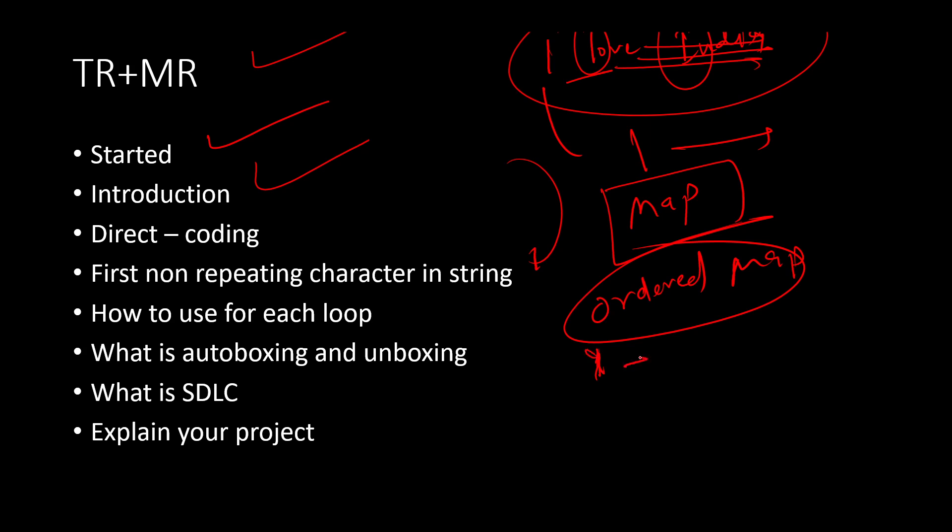First it will store 'I' and in front of 'I' it will place 2 because it is repeating two times. In front of 'L' it will put 1 because L is repeating one time. We can create one ordered map, and after creating the ordered map we can trace the keys and find out in which key the front value is 1. If the front value is 1, we can just return that key.